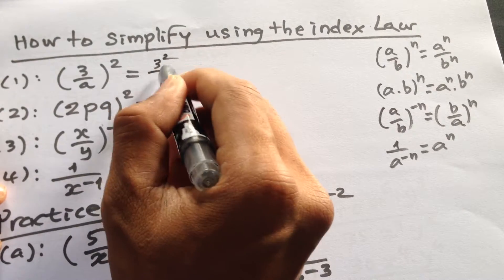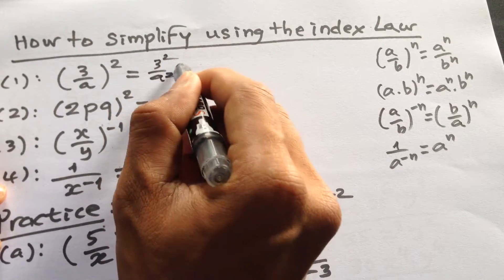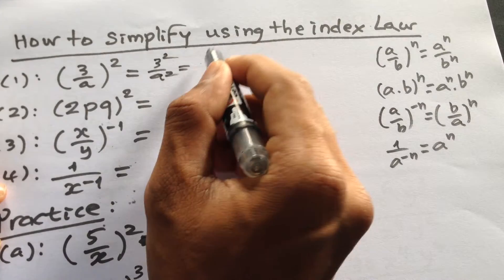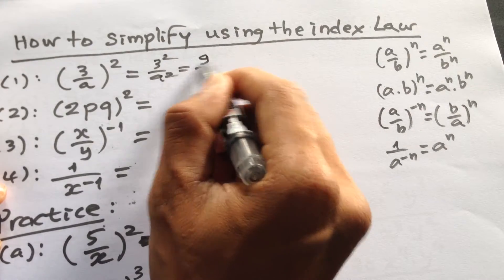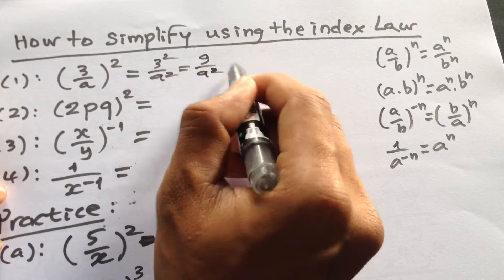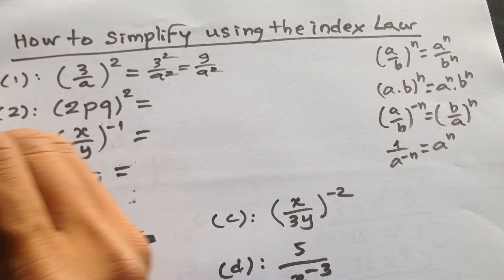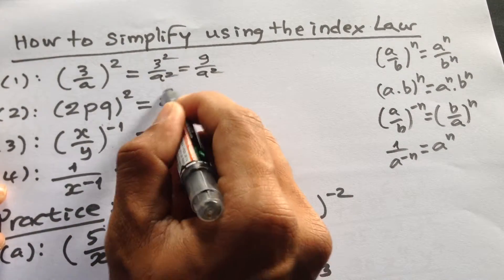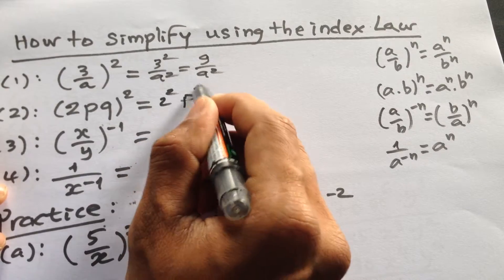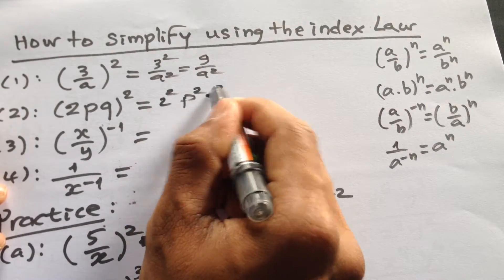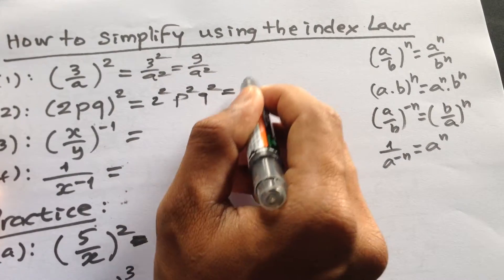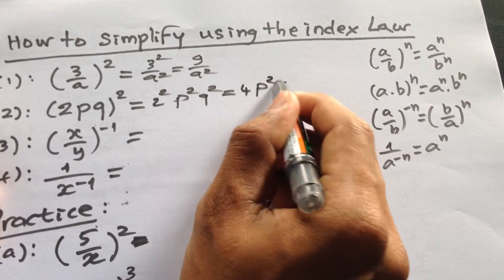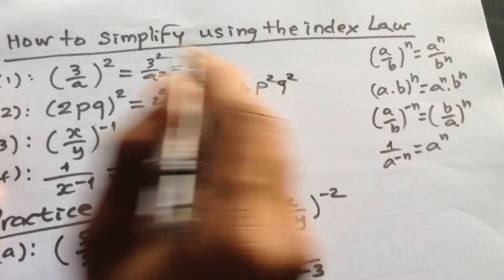We have 3 squared times a squared, and then it will be 9 divided by a squared. How about this one? It will be 2 squared times p squared times q squared, equal to 4 p squared q squared.